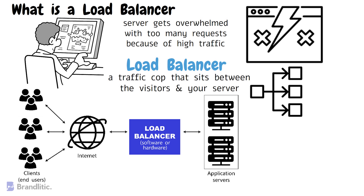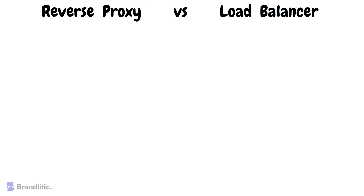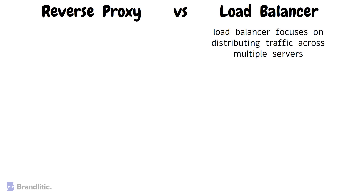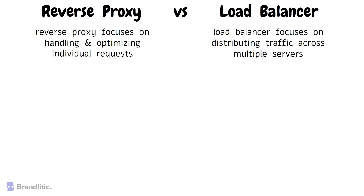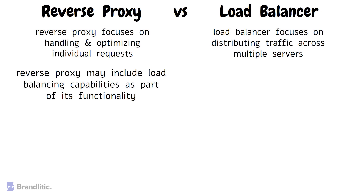The load balancer also keeps track of each server's workload and can dynamically adjust the distribution of requests based on factors like server capacity, response times, or the type of request. This way, it helps ensure that no single server is overloaded while maximizing performance and minimizing downtime. Now let's understand the difference between a reverse proxy and a load balancer. While a load balancer focuses on distributing traffic across multiple servers, a reverse proxy focuses on handling and optimizing individual requests. In some cases, a reverse proxy may include load balancing capabilities as part of its functionality.